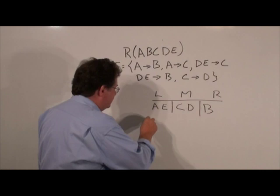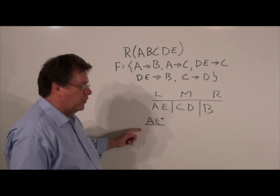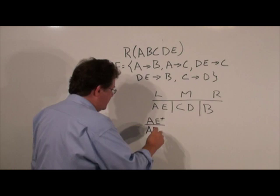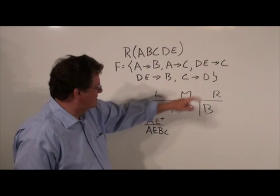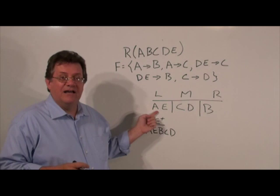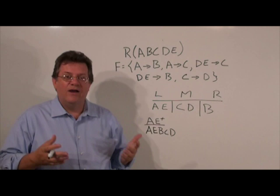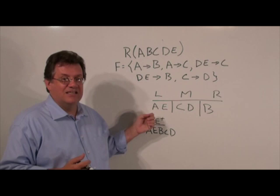The question that comes to mind is whether or not AE is indeed a key. So we try to figure AE closure. We know it's going to include AE by reflexivity. A determines B, A determines C, and C determines D. So it looks like AE is indeed a key. Now, because A and E both appear only on the left-hand side of the functional dependencies, they must be present in every key. So we couldn't have just A or just E as a key — AE is our key.